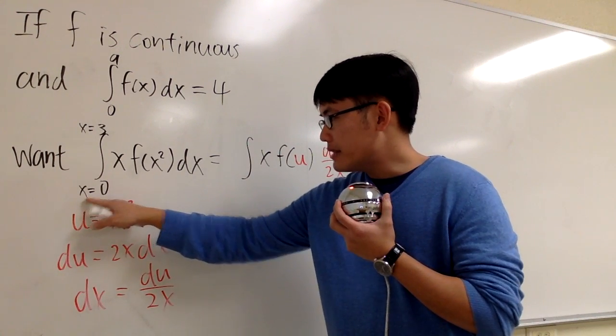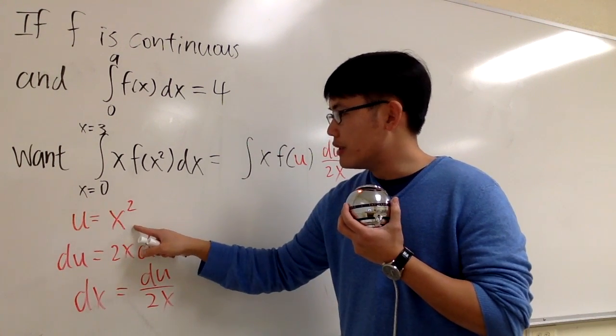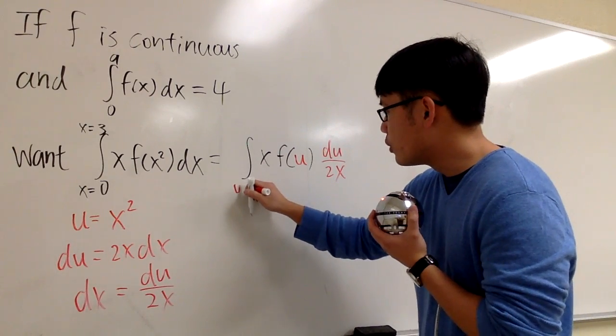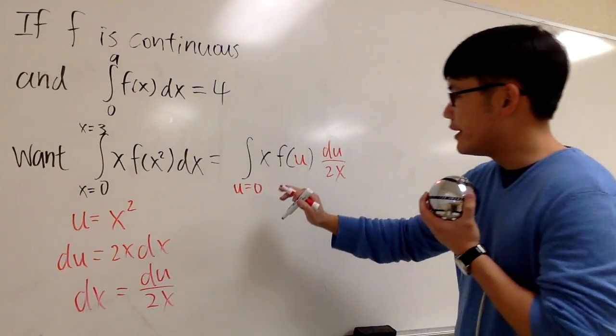If you know x equals 0, plug into here, that means u will be 0 squared, which is 0. So we know in the u world, the integral will start at 0.